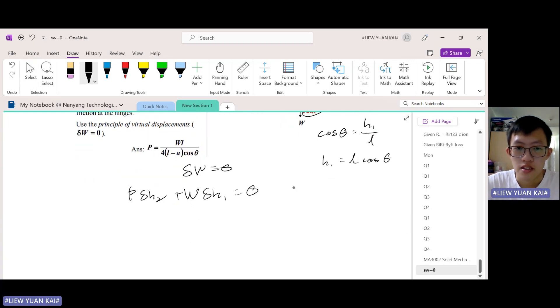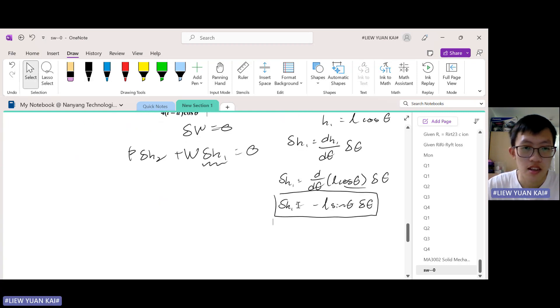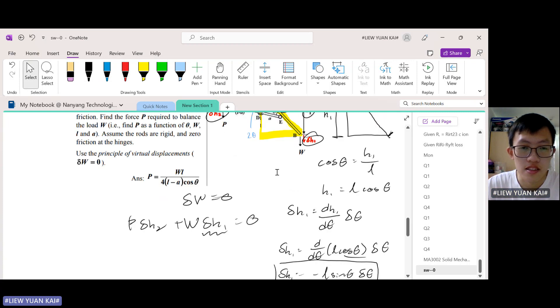We want to find delta h1. Let's use the small approximate change formula, so dh1 equals d(h1)/d(theta) multiplied by delta theta. This equals—we found this earlier—differentiation of cosine is negative sine. So this is our dh1; we'll substitute this into the PVD formula later.